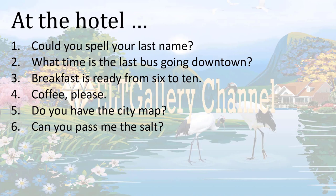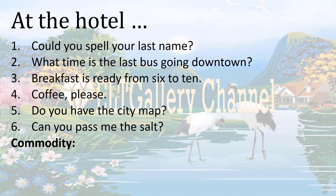Probably 'Coffee, please' is said by a guest to the waiter and he asked for coffee. 'Do you have the city map?' — here we have a question, but we can understand that this sentence is more than asking a yes/no question. The guest probably asks the receptionist whether the hotel provides city maps. 'Can you pass me the salt?' is similar — it asks you to do something, to pass the salt. All the sentences here talk about commodity: in the first three sentences the commodity is information, and in the last three the commodity is an object.